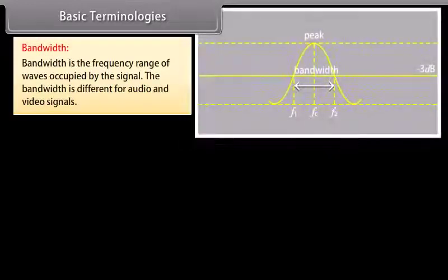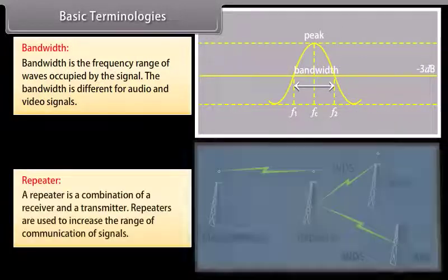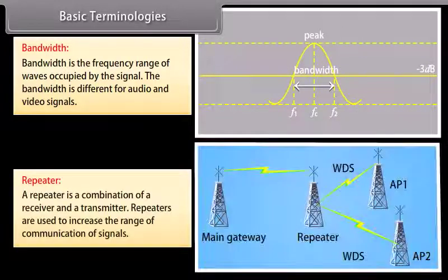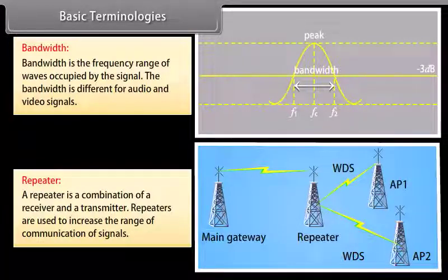Bandwidth: bandwidth is the frequency range of waves occupied by the signal. The bandwidth is different for audio and video signals. Repeater: a repeater is a combination of a receiver and a transmitter. Repeaters are used to increase the range of communication of signals.